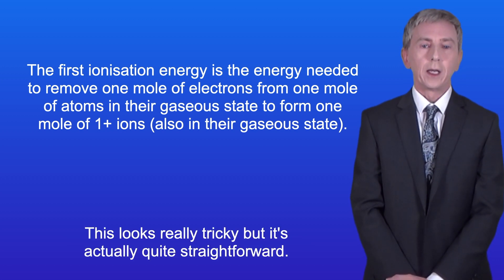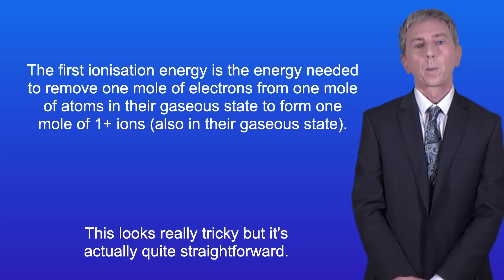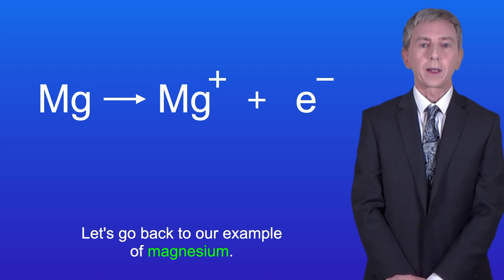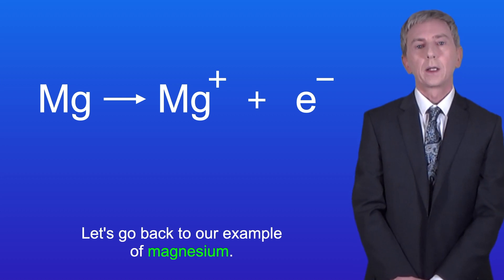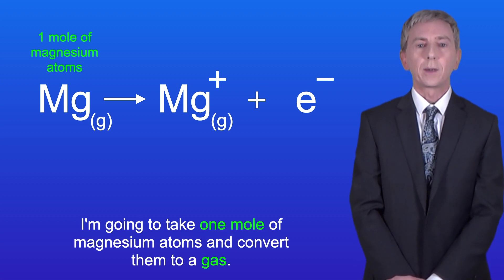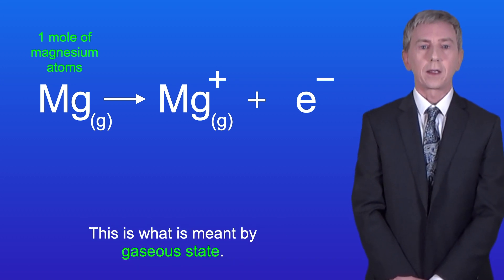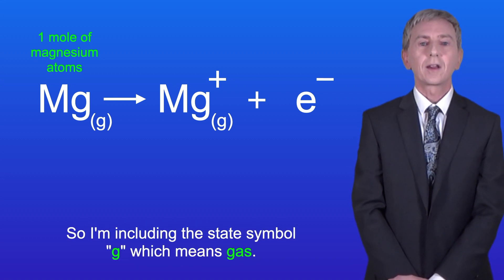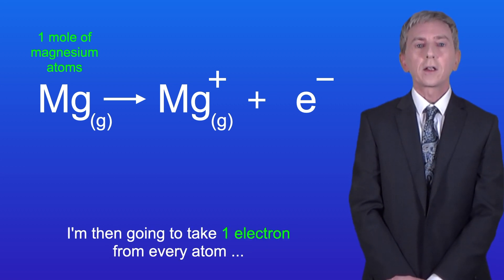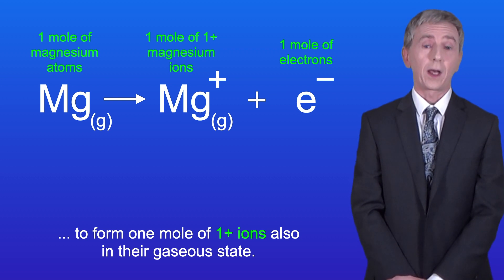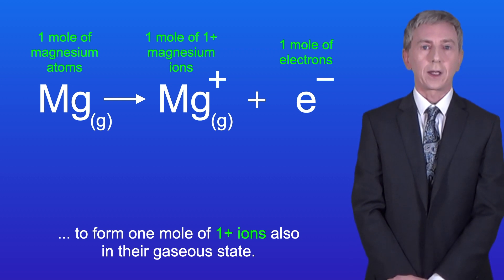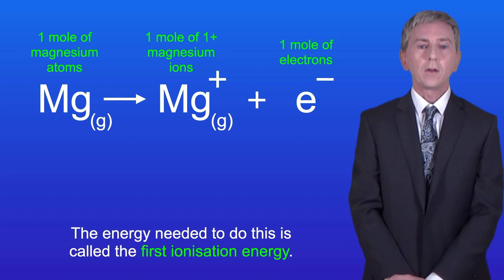Now this looks really tricky but it's actually quite straightforward. Let's go back to our example of magnesium. I'm going to take one mole of magnesium atoms and convert them to a gas — this is what is meant by gaseous state, so I'm including the state symbol G which means gas. I'm then going to take one electron from every atom to form one mole of 1+ ions also in their gaseous state, and the energy needed to do this is called the first ionization energy.